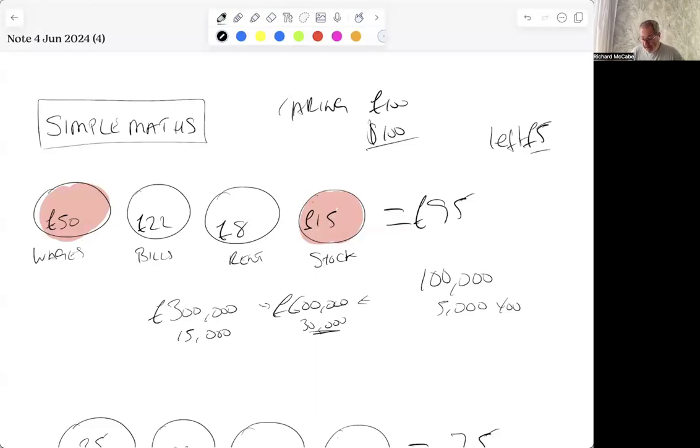And the problem with that is only about 5% of salon owners will get above half a million. So this model that everyone uses, if your wage bill is sitting around that 50% and your stock is sitting around 15%, no matter how hard you work, you're going to struggle to make money.